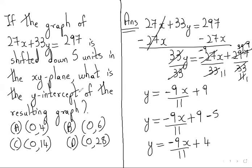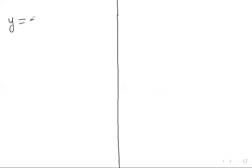Now they are saying what is the y-intercept of the resulting graph. So y-intercept we will get when x value is 0. So here instead of x, we will write 0.